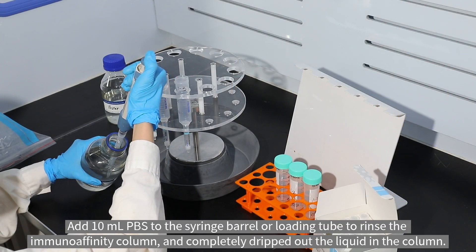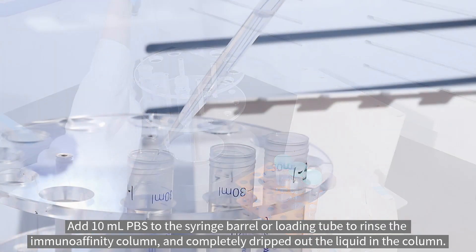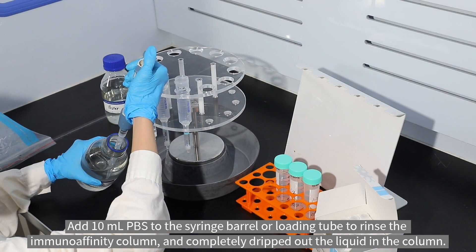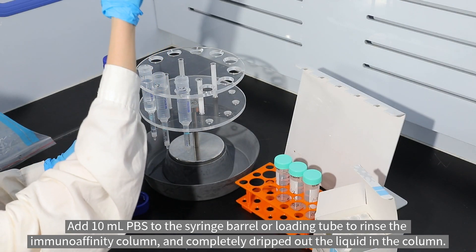Add 10 milliliter PBS to the syringe barrel or loading tube to rinse the immunoaffinity column and completely drip out the liquid in the column.